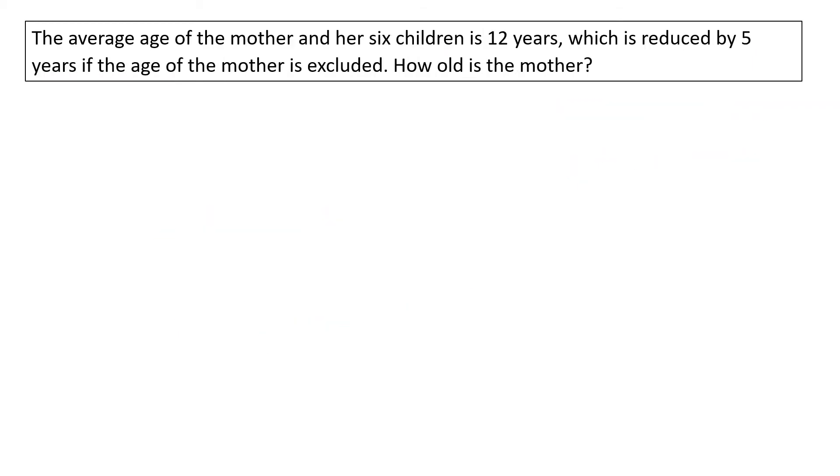The average age of the mother and her six children is 12 years, which is reduced by 5 years if the age of the mother is excluded. How old is the mother?